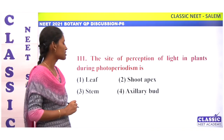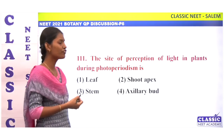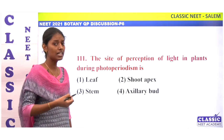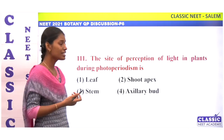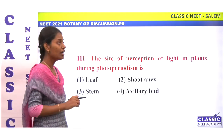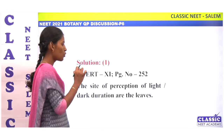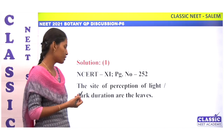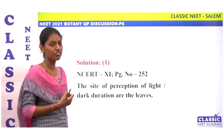The site of perception of light in a plant during photoperiodism. The response of the plant to the relative day and night length is called photoperiodism. The site of perception of light or dark duration is the leaf. Option 1.